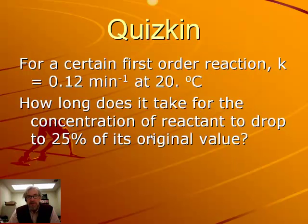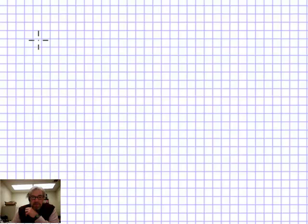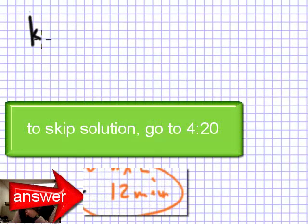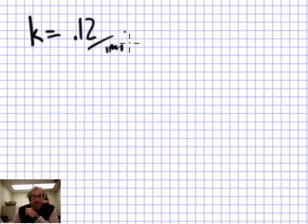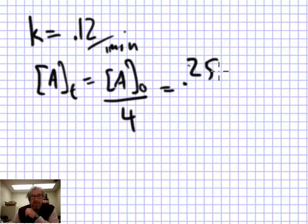This first question asks: for a first-order reaction where K is 0.12 per minute at 20°C, how long does it take for the concentration of the reactant to drop to 25% of its original value? K equals 0.12 per minute, and we want the concentration of A at time T to equal the initial concentration divided by 4, or 0.25 times A-naught.